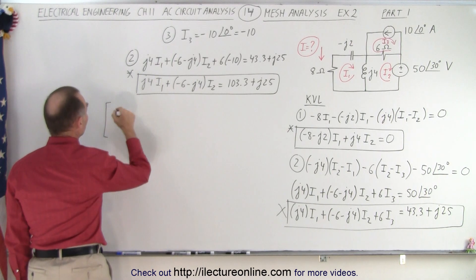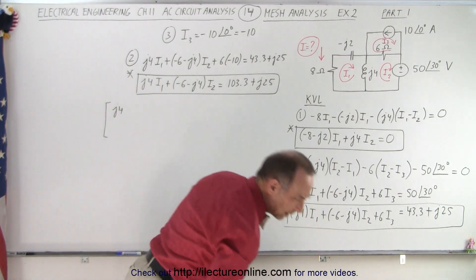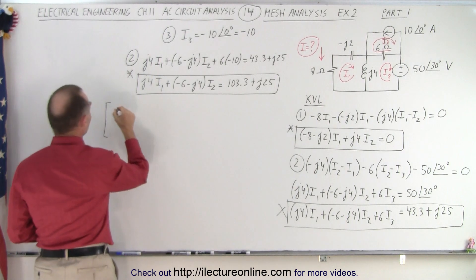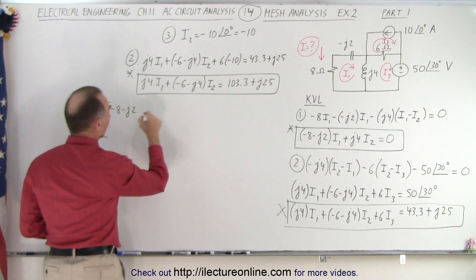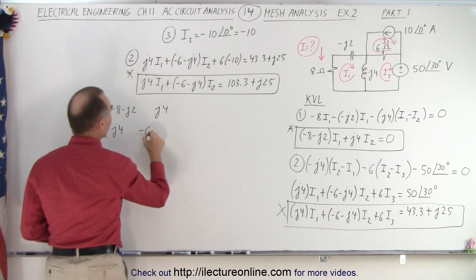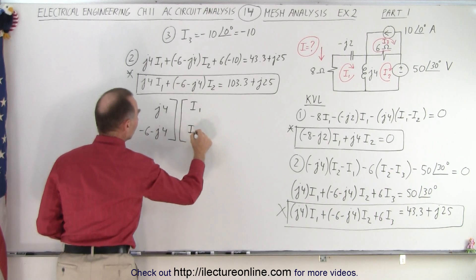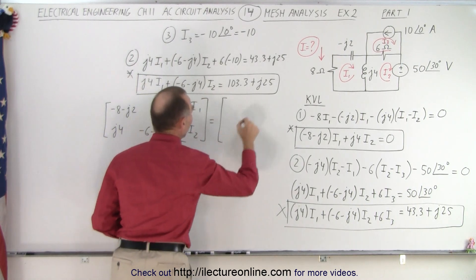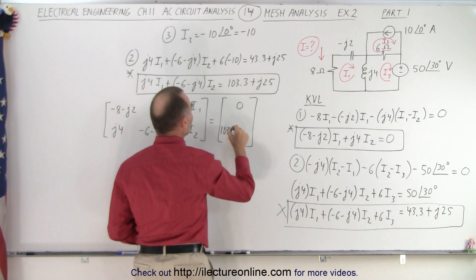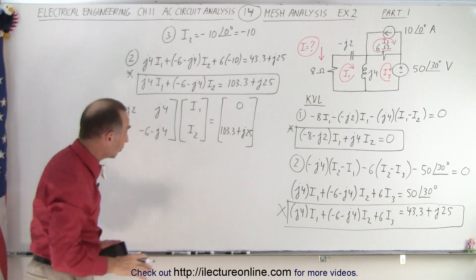So then we can write that we have... Let's start with equation number one. I like to do that, instead of just typical format. So let's take equation number one, so we have minus 8 minus J2, plus a J4 over here, we end up with a positive J4 and a minus 6 minus J4. And if we multiply that times the two currents I1 and I2, that should then add up to the two terms on the right side of the equation. On the first equation we have a zero, and on the second equation we have 103.3 plus J25. So now we have a nice matrix that we can solve using determinants.